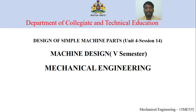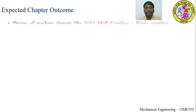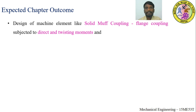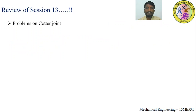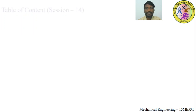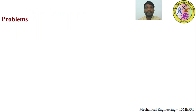In this session we are going to solve a different problem — this is the last session of this chapter. The chapter outcomes include: design of machine elements like solid muff coupling, flange coupling subjected to direct and twisting moments, and knuckle joint and cotter joint subjected to direct stress, and analyzing the various modes of failure with numerical examples. The contents of this session, session 14, are problems on cotter joint continued, and a test.